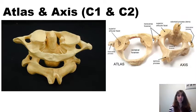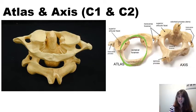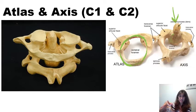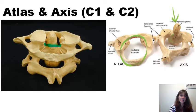Here we have a picture of Atlas and Axis. Atlas, you can see, is just a ring, and that is where the vertebral foramen is the largest. There is no vertebral body in Atlas. Axis, which is the second cervical vertebra, not only has a vertebral body, it also has a special tooth-like process called the odontoid process or dens. The dens is the structure around which Atlas will rotate. A transverse ligament holds Atlas in place on top of Axis so that rotation can occur.